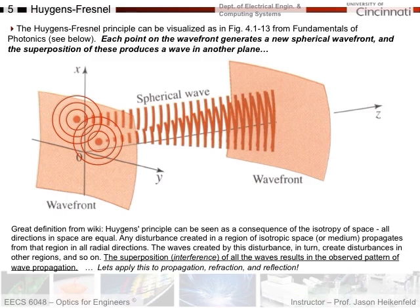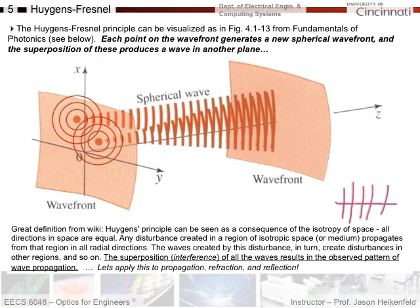The Huygens-Fresnel Principle can be visualized as shown here, from the Fundamental Photonics book. I've got a wavefront — let's say this is one wavefront of light. With this principle, each point on the wavefront generates a new spherical wavefront where the light could go in any direction. That's different from what we'd expect, because normally we expect waves to be moving forward. But what this says is that each point can re-radiate the light in any direction.